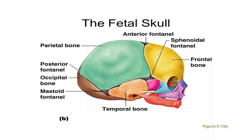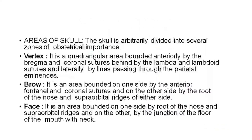This is the picture of a fetal skull. The bones include the parietal bone, posterior fontanelle, occipital bone, mastoid fontanelle, anterior fontanelle, sphenoid fontanelle, frontal bone, and temporal bone.